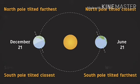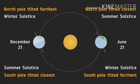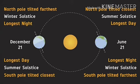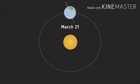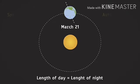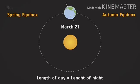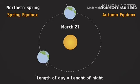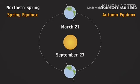At December 21 and June 21, both hemispheres experience their longest day. At both sides of the pole region, there are times when the length of the day equals the length of the night. This occurs at the north pole around March 21 and at the south pole around September 23.